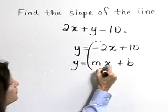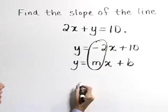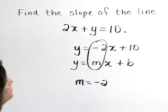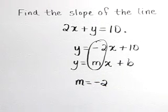m represents the slope. So we can identify the slope in this equation as negative 2. Therefore, the slope of the line 2x plus y equals 10 is negative 2.